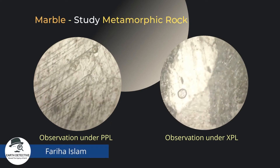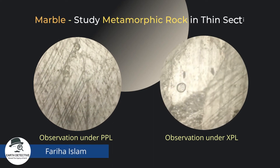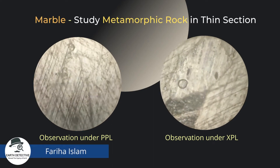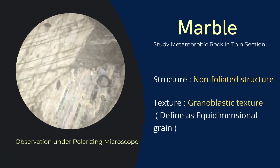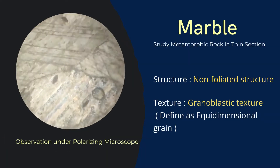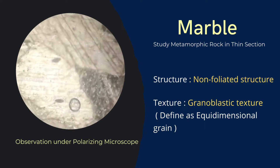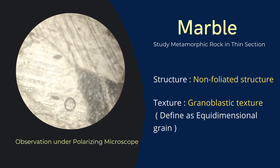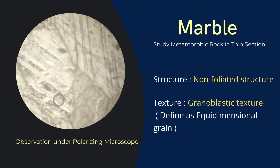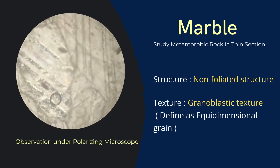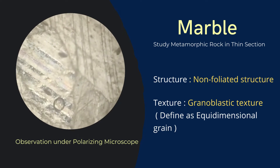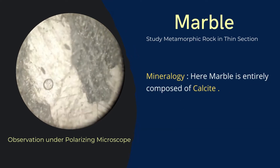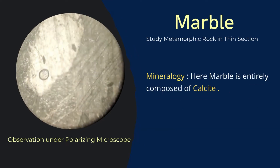In this video we are going to study marble under the microscope. The structure of this rock is non-foliated and the texture of the grains is granoblastic, which refers to equidimensional grains. The rock is entirely composed of calcite.